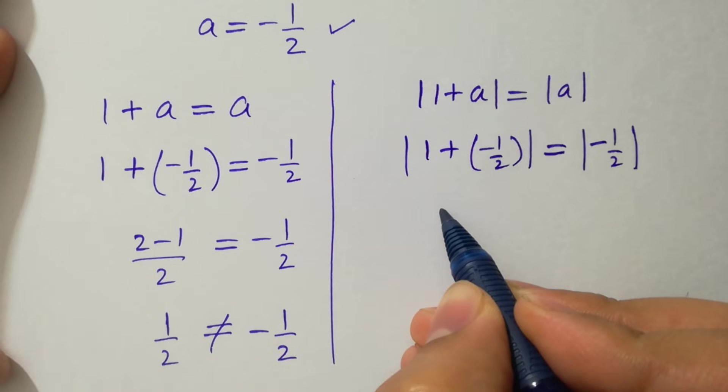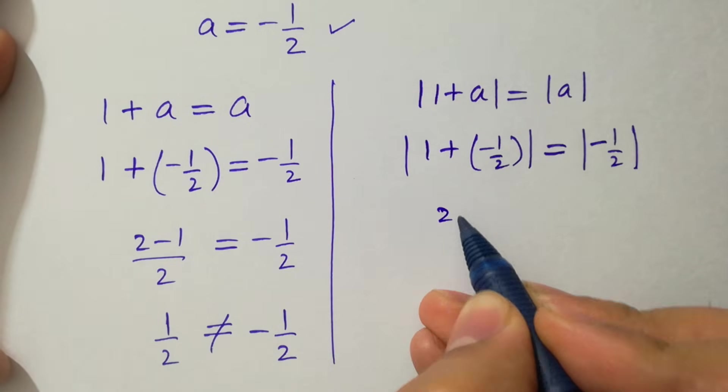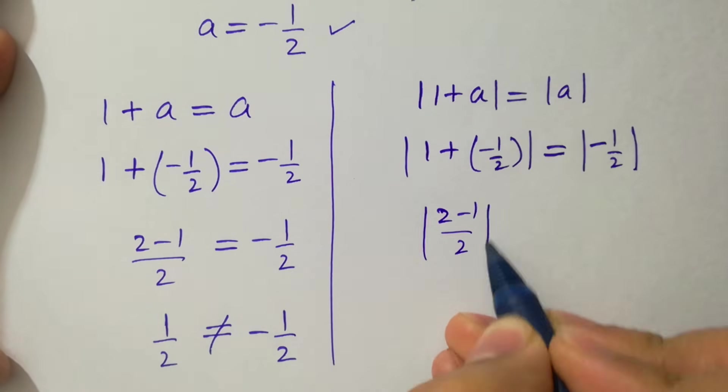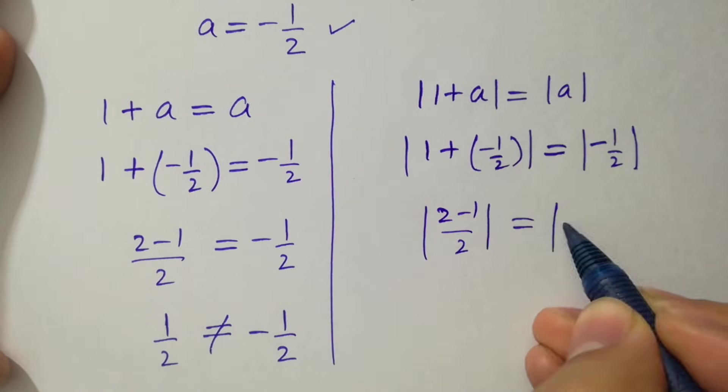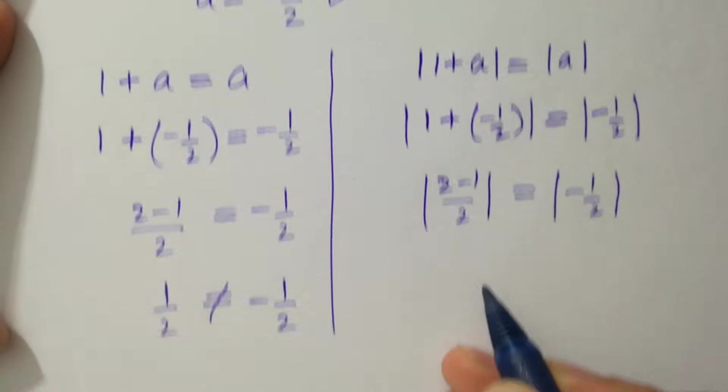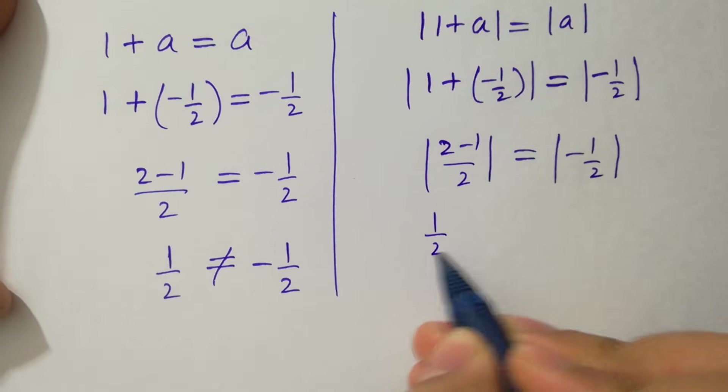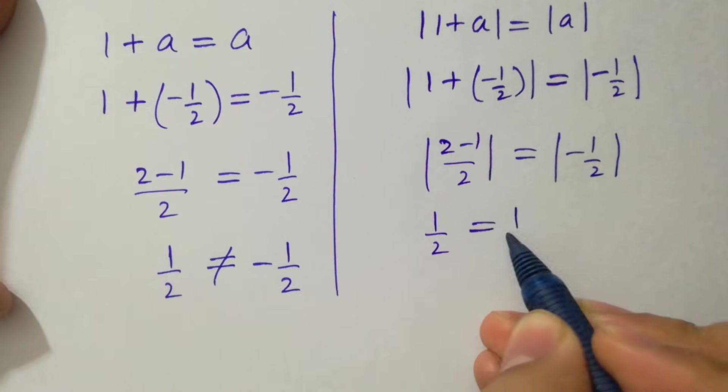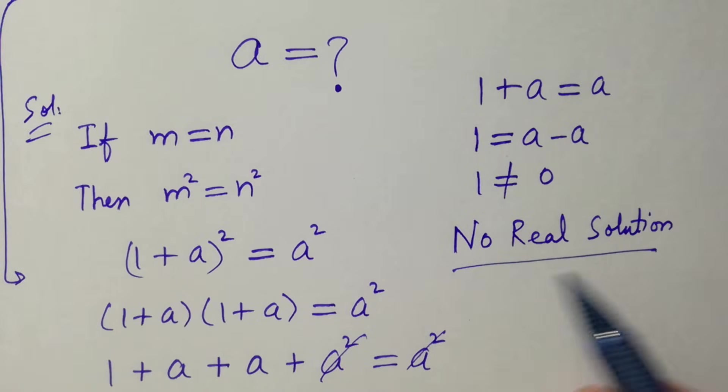We have (2 - 1)/2 in absolute value, which equals |-1/2|. Then you can see 1/2 = 1/2. But this equation has no real solution.